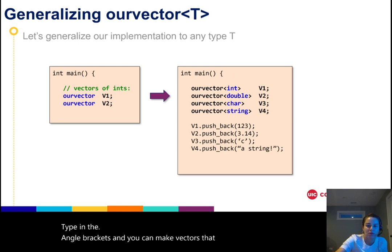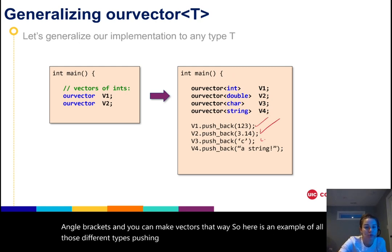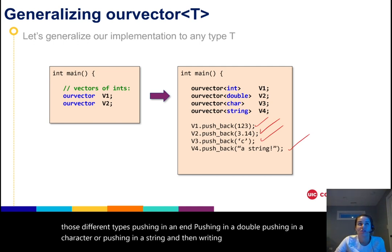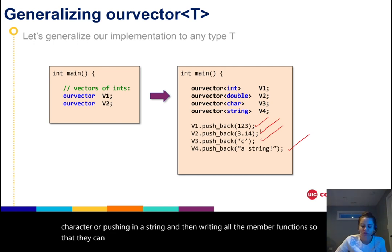So here's an example of all those different types, pushing in an int, pushing in a double, pushing in a character, pushing in a string, and then writing all the member functions so that they can also work generally for all those different things as well.